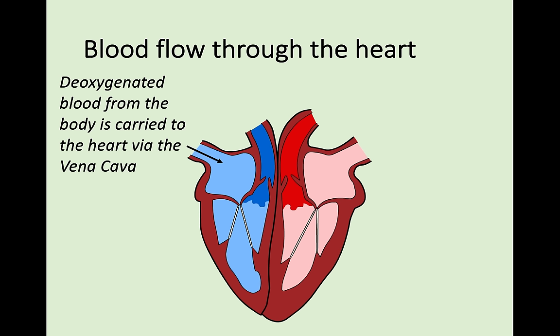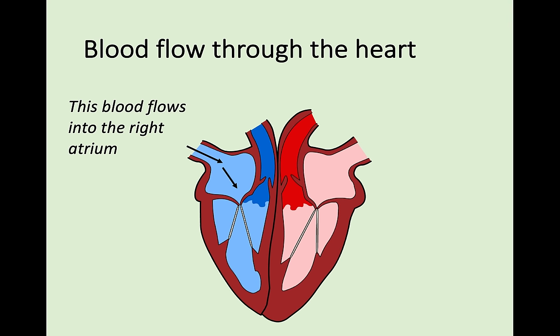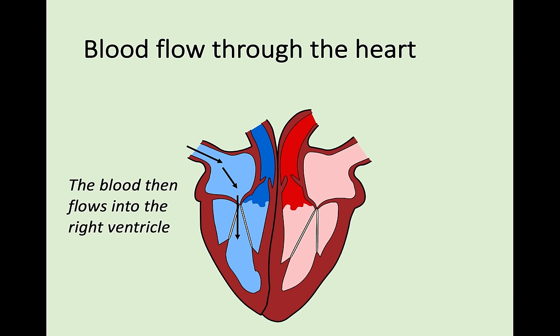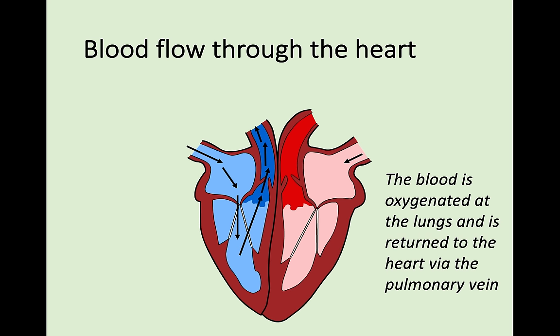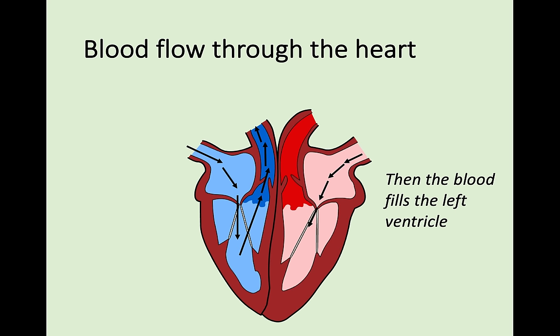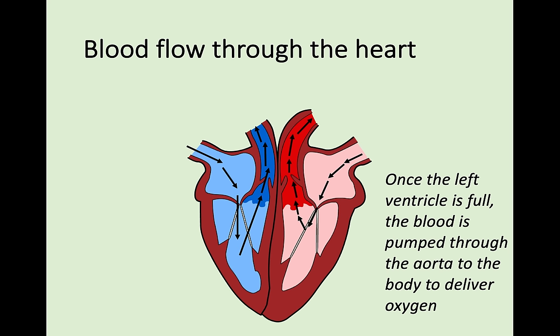Let me go through the whole process of blood flow through the heart once more. Deoxygenated blood from the body is carried into the heart through the vena cava, into the right atrium, then into the right ventricle. Once the ventricle fills up, blood is pumped through the pulmonary artery to the lungs. The blood then comes back into the left atrium through the pulmonary vein, into the left ventricle, which fills up and pumps all the blood through the aorta to deliver oxygen around the body.